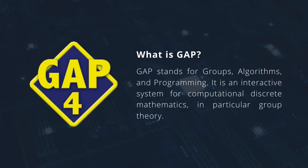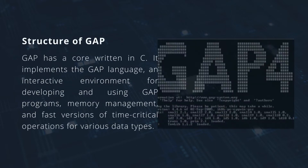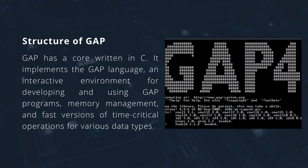First, what is GAP? GAP stands for Groups, Algorithms, and Programming. It is an interactive system for computational discrete mathematics, in particular group theory. The structure of GAP has a core written in C. It implements the GAP language, an interactive environment for developing and using GAP programs, memory management, and fast versions of time-critical operations for various data types.